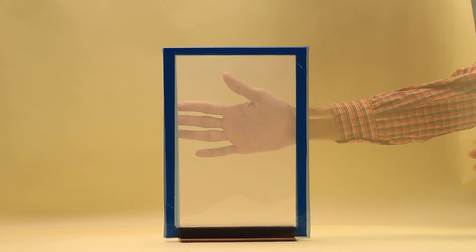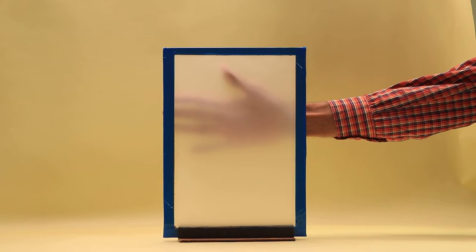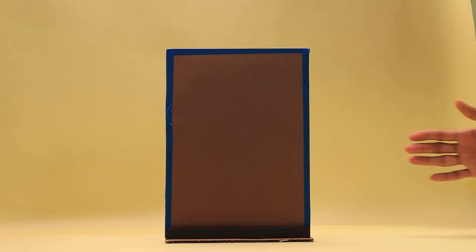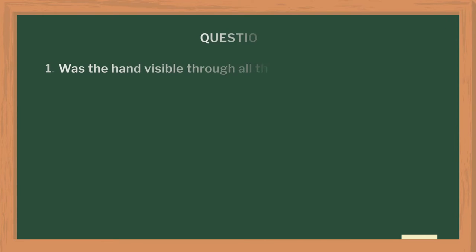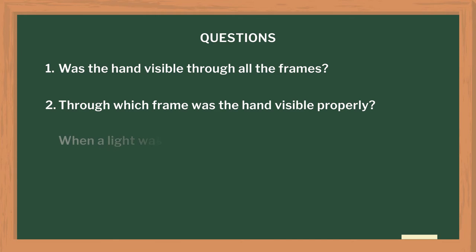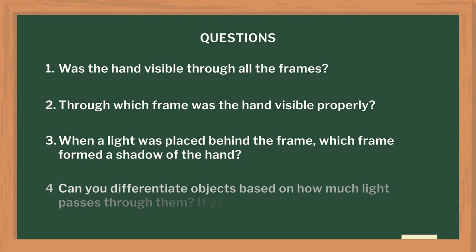Place your hand behind each frame and ask students to observe it. Was the hand visible through all the frames? Through which frame was the hand properly visible? Which frame forms a shadow when we place it in front of the light? Can you differentiate objects based on how much light passes through them? If yes, then give some examples.